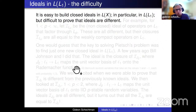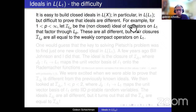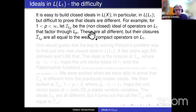Before going into what we proved, I want to describe the difficulty briefly. It's very easy to build different algebraic ideals — the problem is when you take the closure. For instance, for any p strictly between 1 and ∞, you can look at the operators on capital L1 which factor through capital Lp. These are all different algebraic ideals, but once you take the closure they all collapse to just one ideal — the weakly compact operators.